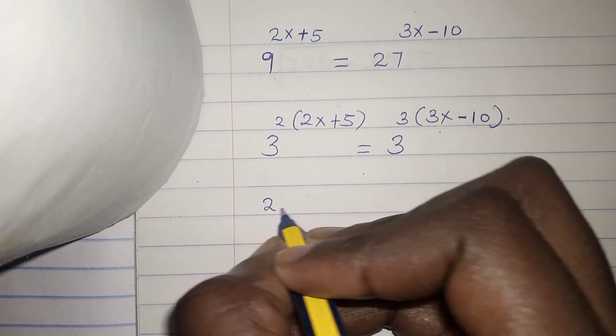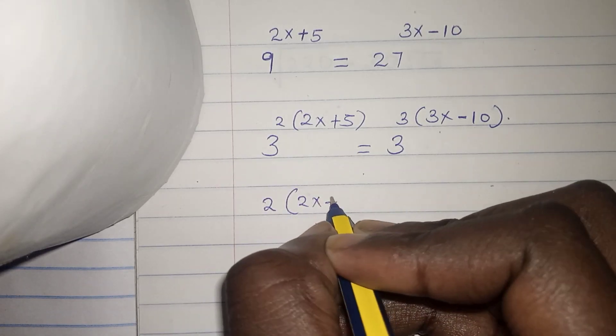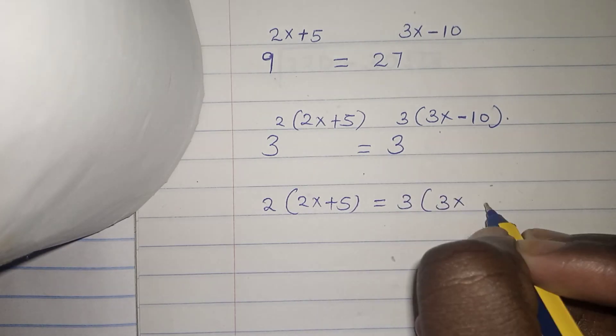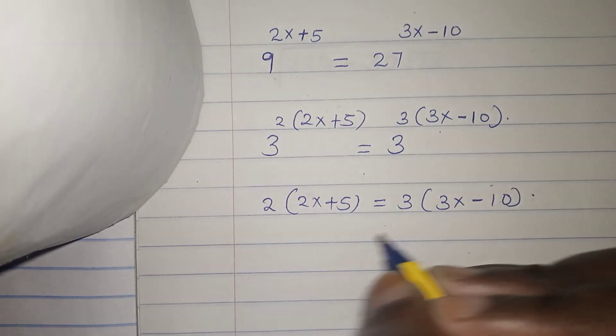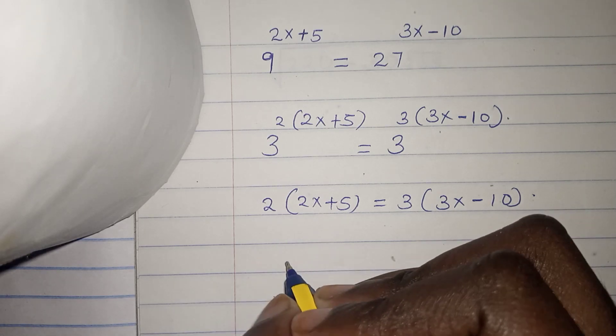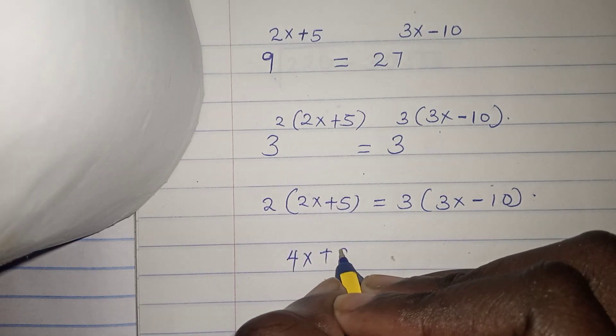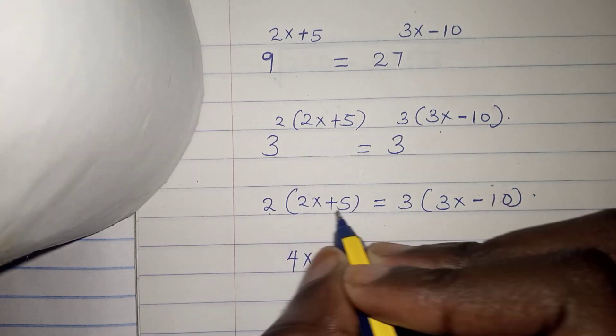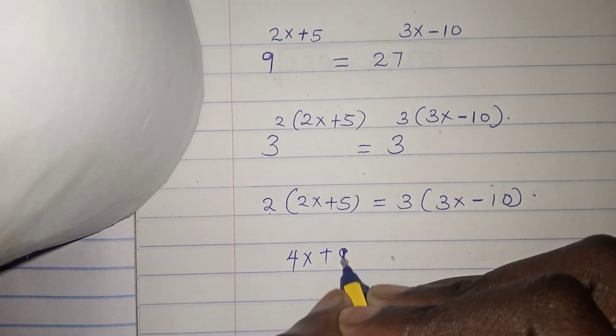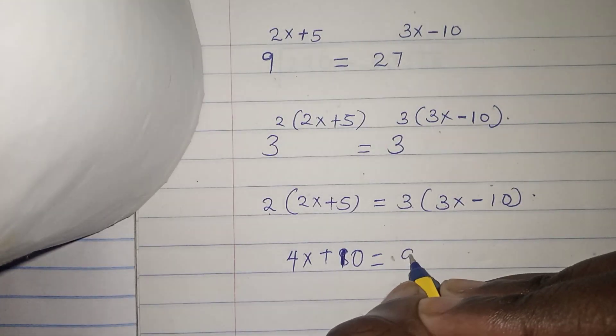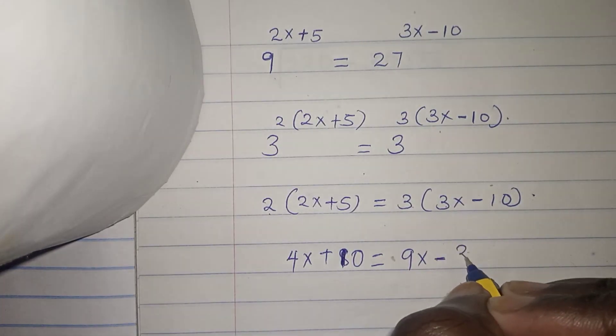So this will be 2 times 2x plus 5 equals 3 times 3x minus 10. So let us solve this. 2 times 2x gives us 4x, and 2 times 5 gives us 10. This equals 3 times 3x which is 9x, minus 30.